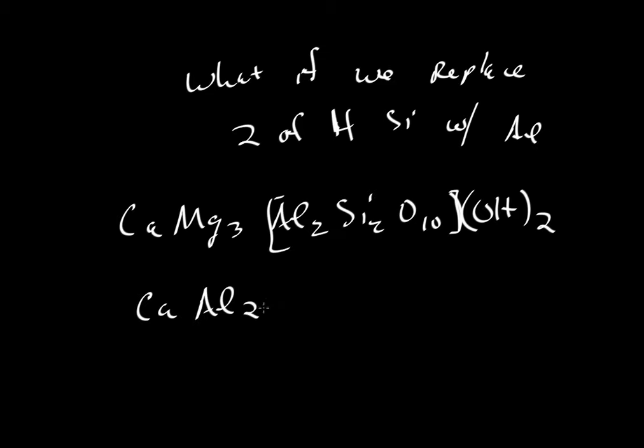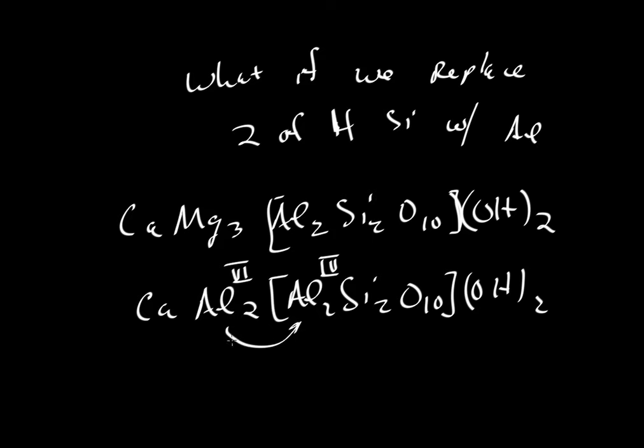So we can have CaAl2, and then Al2Si2O10, and then OH2. These would give us the minerals clintonite and marjorite. For the case of putting in two aluminums here, notice that these aluminums are in fourfold coordination, and these fellows are in sixfold coordination. That's why we write the aluminums twice. When I was a beginning student, that confused me quite a bit. Why don't we just collapse all these and call them CaAl4Si2O10OH2?